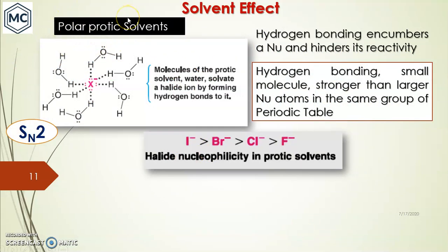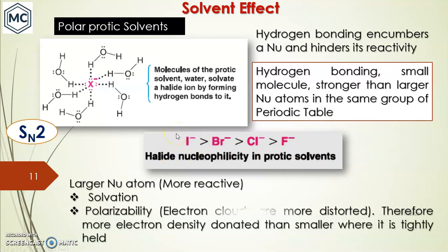The third factor is solvent effect. There are two kinds of solvents: polar protic and polar aprotic. In SN2, the nucleophile gets solvated in a protic solvent through hydrogen bonding, which hinders the nucleophile's reactivity. Hydrogen bonding is stronger for smaller nucleophiles than larger ones. For I⁻, hydrogen bonding is less compared to F⁻. Larger nucleophiles are more reactive for two reasons: less solvation and greater polarizability.